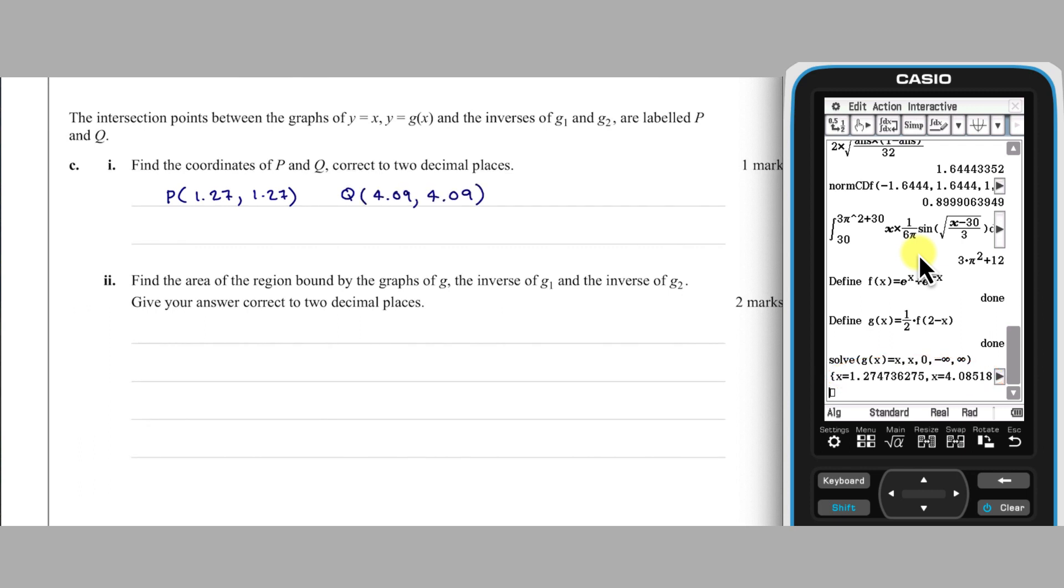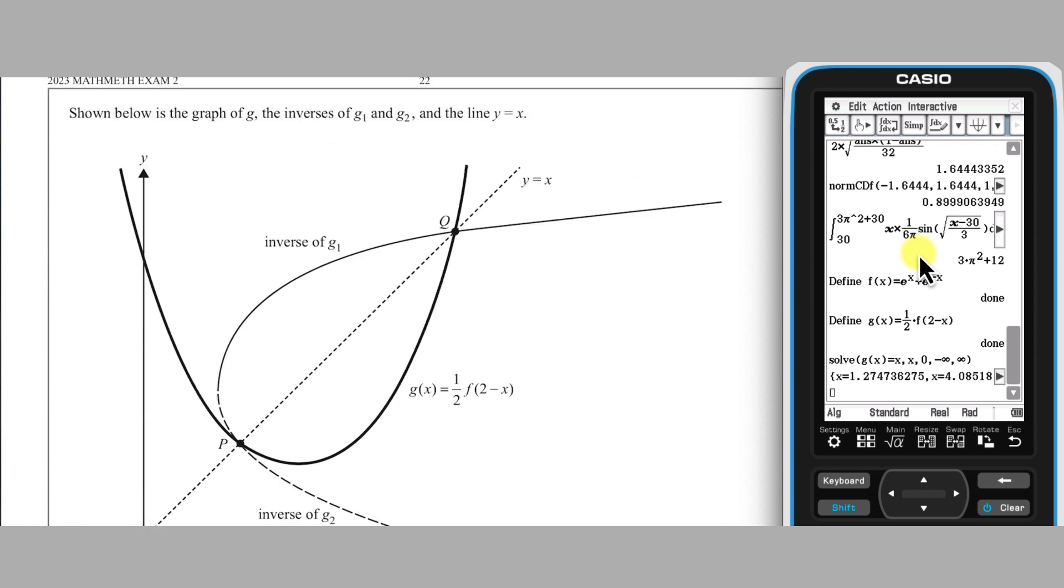In part C, part 2, we are asked for the area of this region. Due to the symmetry of inverse functions about the line Y equals X, this can be found by doubling the area between Y equals X and Y equals G of X.